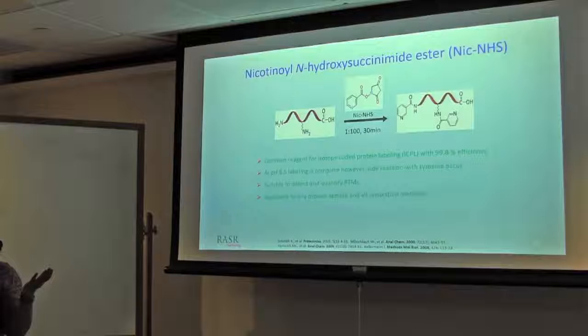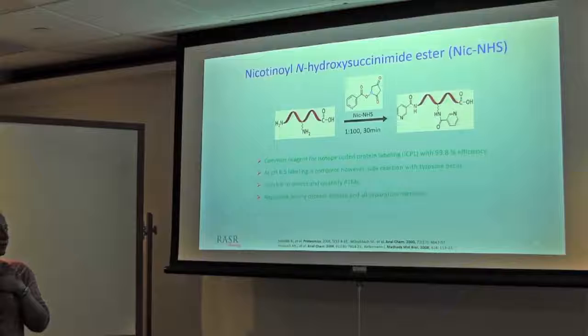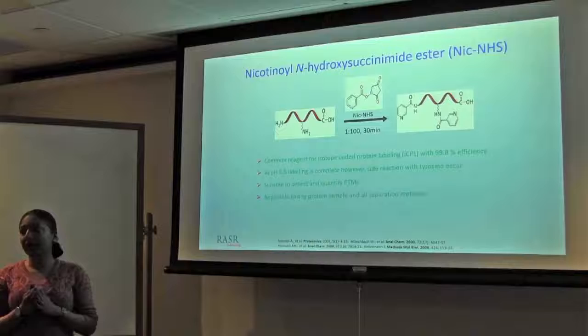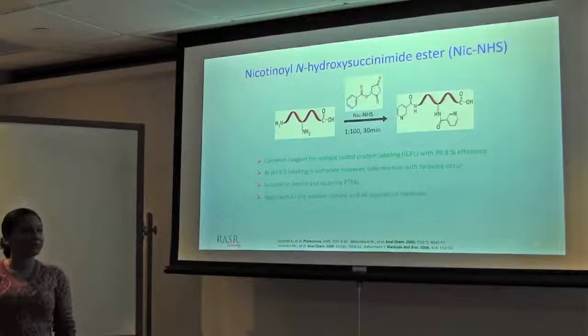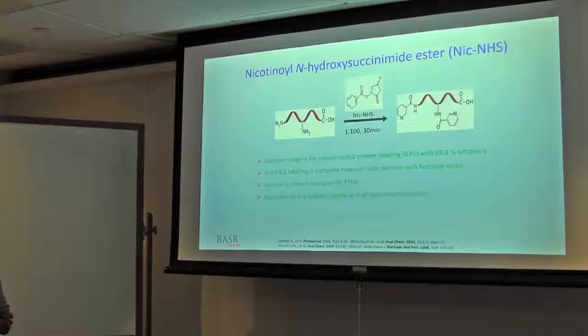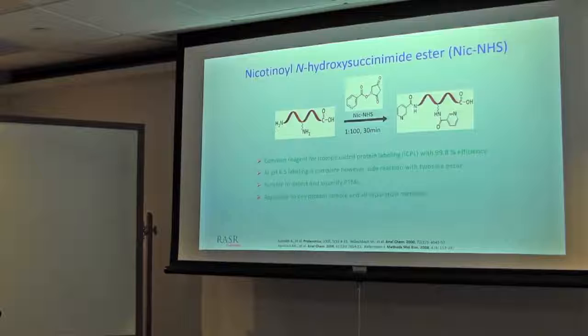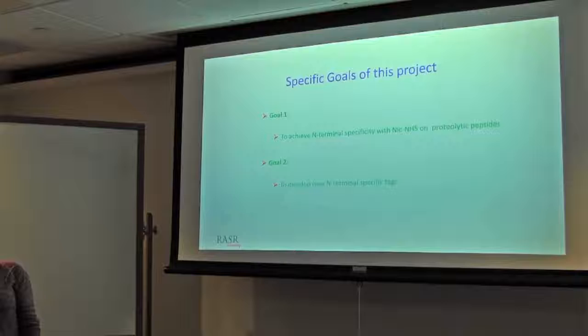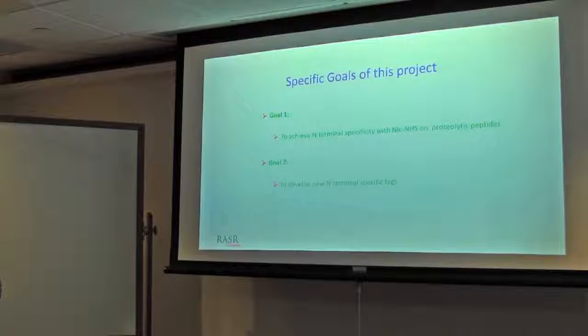I started working with hydroxysuccinimide ester, which is already published for protein labeling. We want to use it at peptide level, but not for all primary amines. However, only for N-terminal amines. My project was that it can be directed only towards N-terminal amines, but not towards the lysine side chain. It is very easy to work with. Labeling is almost complete. At neutral to basic pH, it is labeling the amino group completely. Again, it is suitable to all kinds of sample and separation methods. My part of the project was how we can achieve N-terminal labeling by using hydroxysuccinimide ester. Also, if we can develop some new tags.